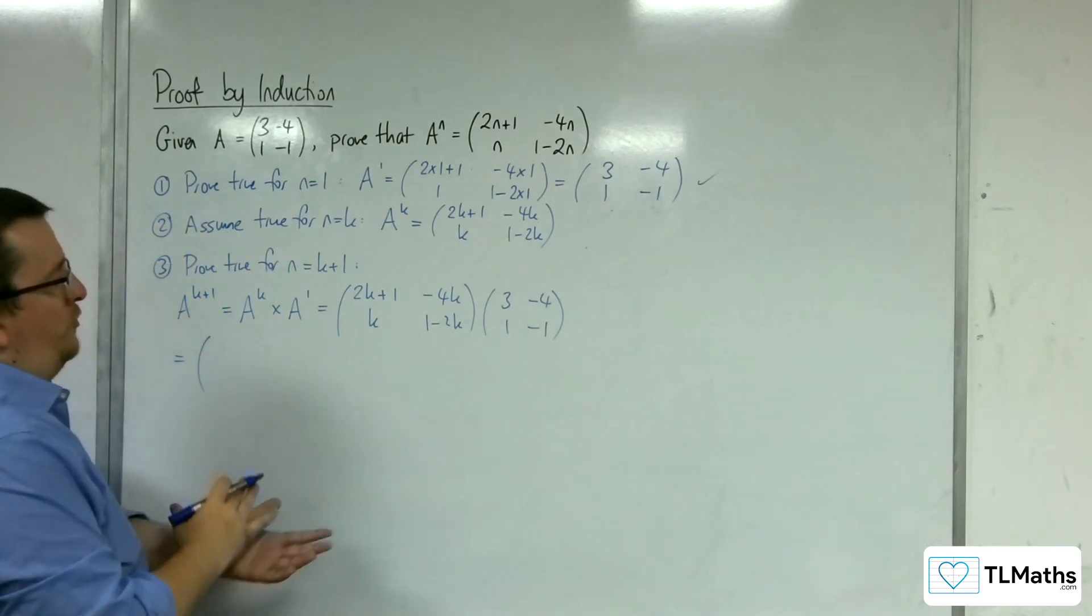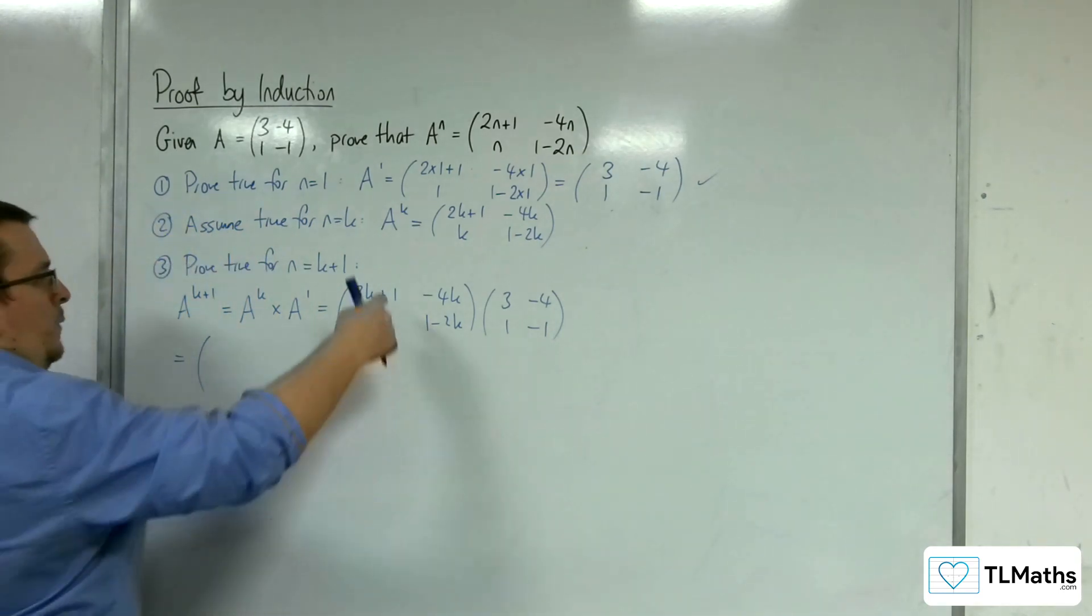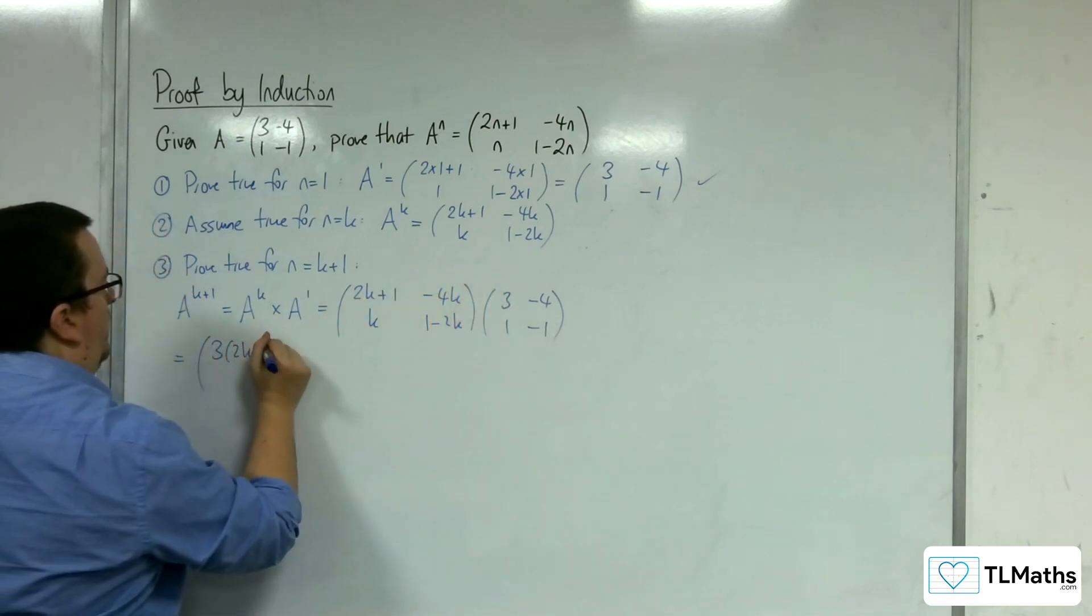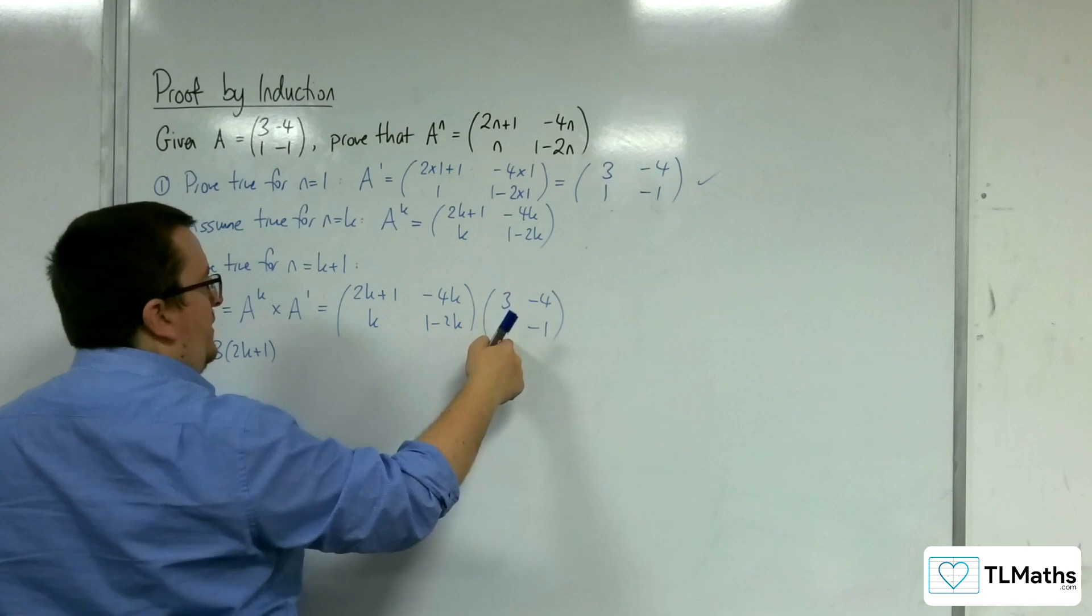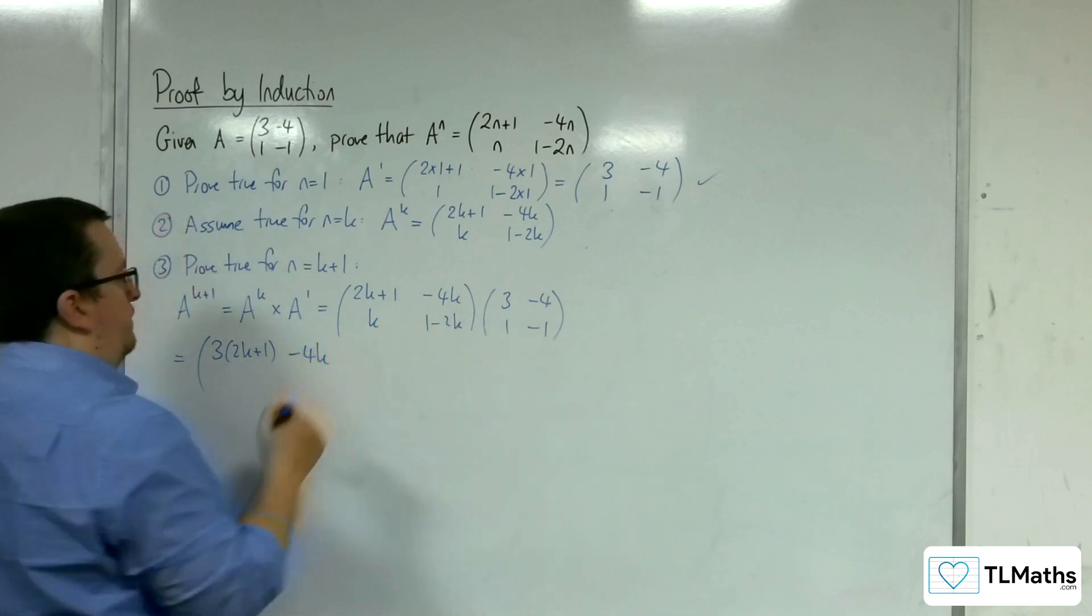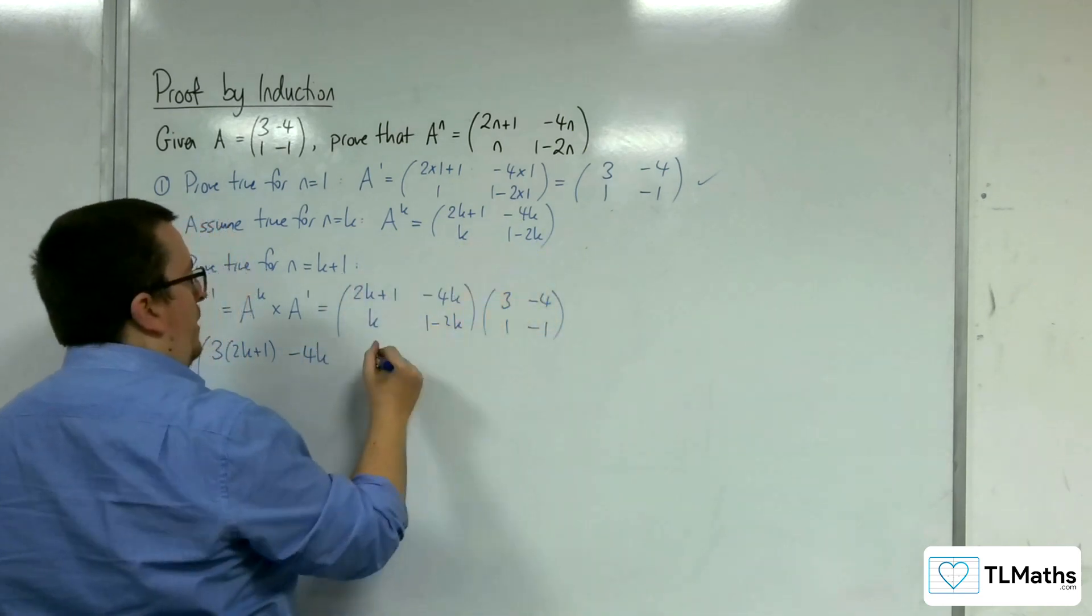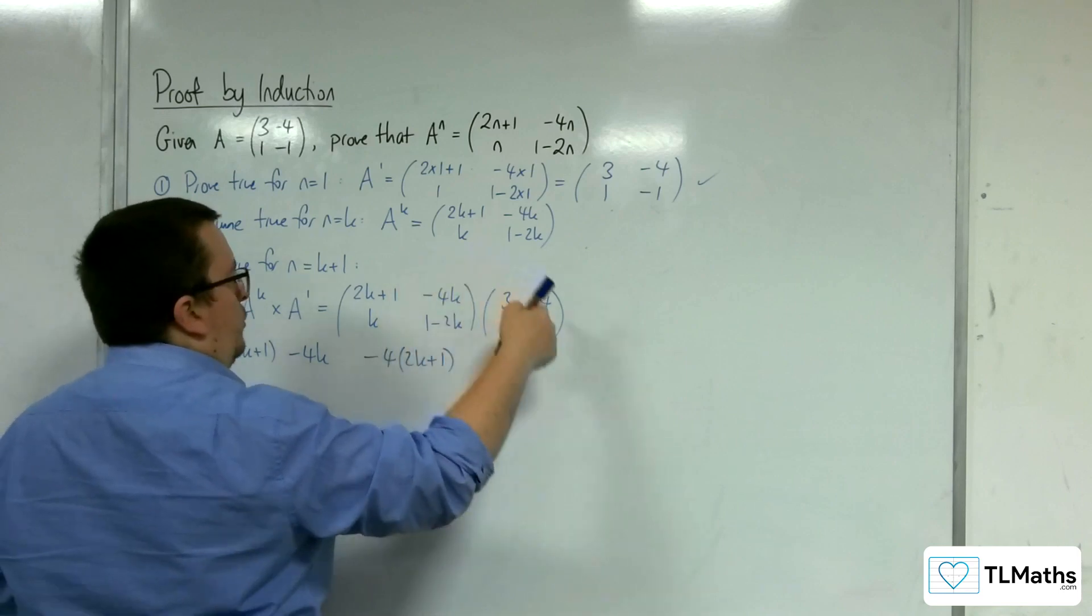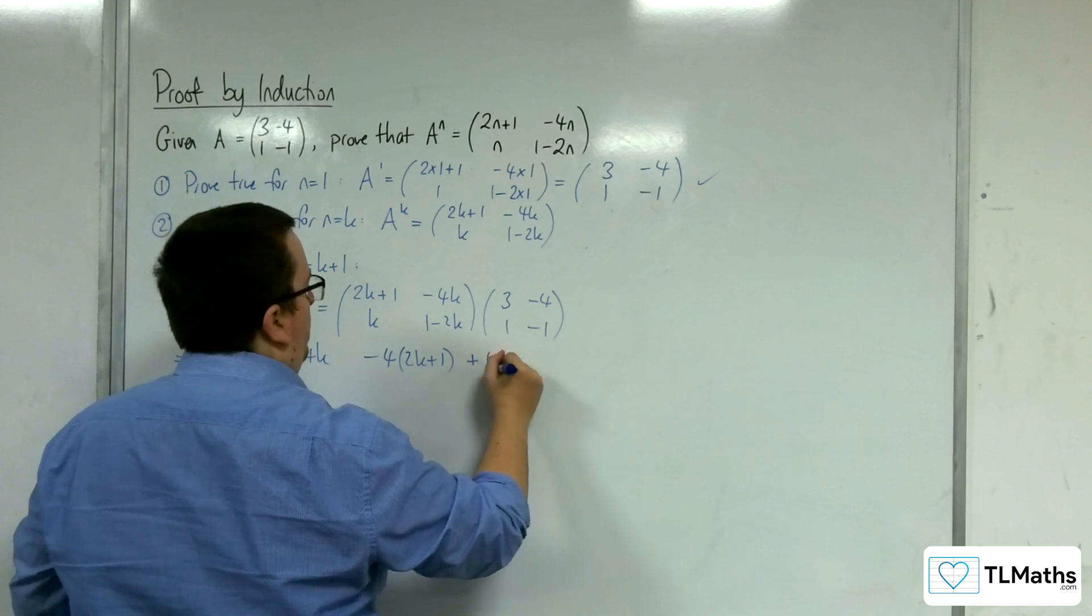So I need to multiply these two matrices together. We get the 2k plus 1 times the 3, so 3 lots of 2k plus 1, and then minus 4k times 1, so minus 4k. We've got the 2k plus 1 multiplied by the minus 4, so minus 4 lots of 2k plus 1, and then minus 4k times minus 1 gives me plus 4k.